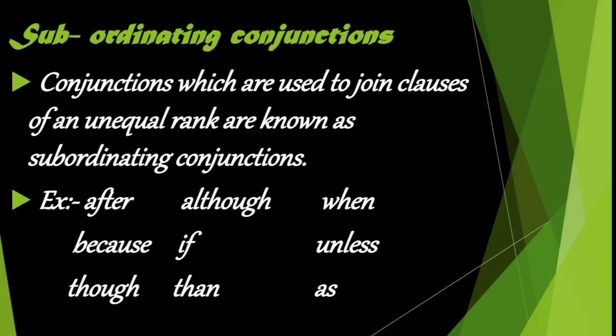The fourth kind is subordinating conjunctions. Conjunctions which are used to join clauses of unequal rank are known as subordinating conjunctions. Examples of subordinating conjunctions are: after, because, though, although, if, then, when, unless, as.